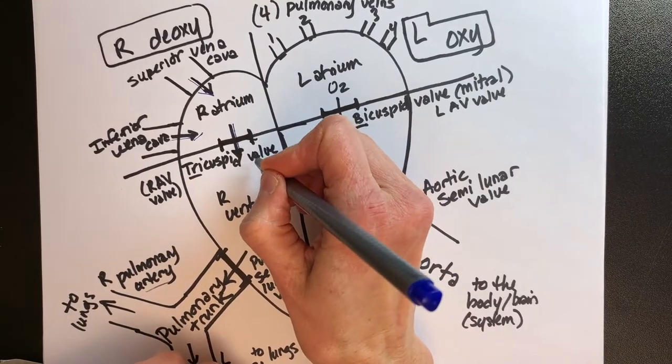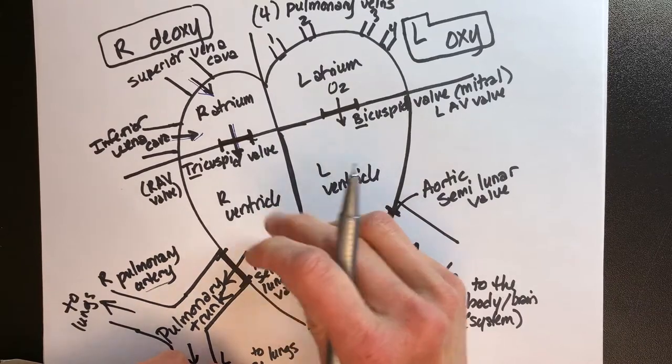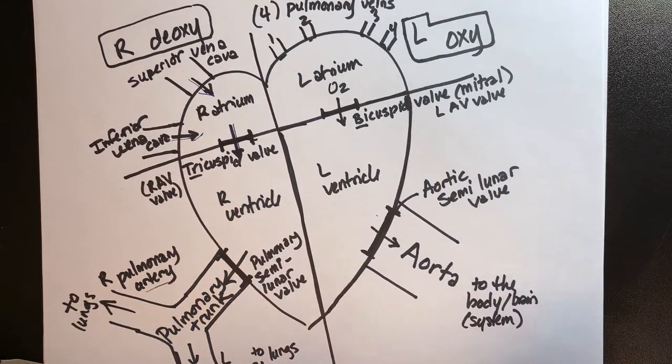We'll go through the tricuspid valve, which is a door. We need to close the door once we get down to the right ventricle so blood does not travel back upstairs.